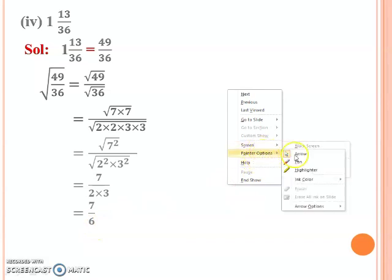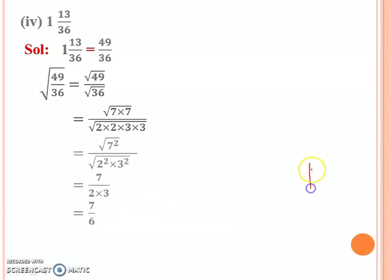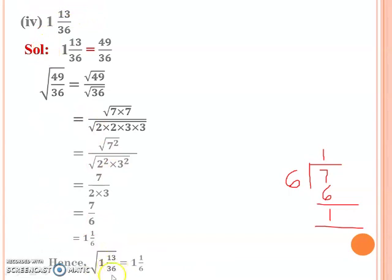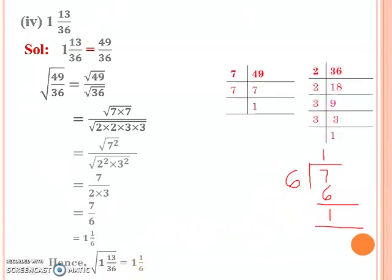Now since 7 is greater than 6, meaning numerator is greater than denominator, you can divide. So divide 7 by 6: 6 ones are 6, quotient is 1, remainder is 1. Write the answer as a mixed fraction with the quotient on the side and remainder over divisor.